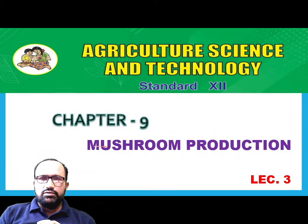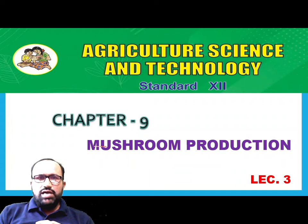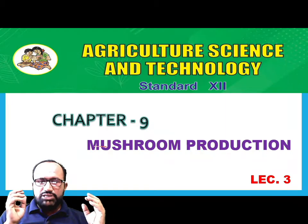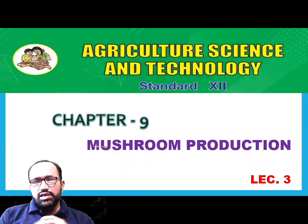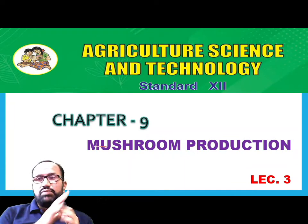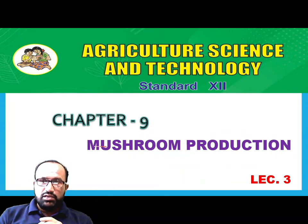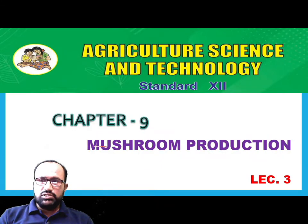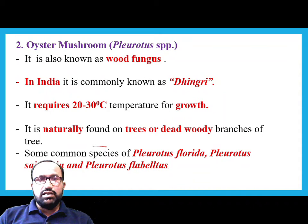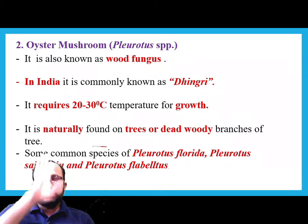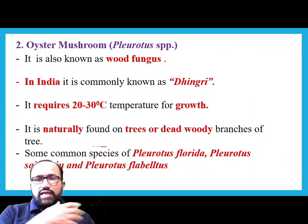Welcome to Khan's Crop Academy. Good morning students. We are going to learn Agriculture Science and Technology, Standard 12th, Chapter 9: Mushroom Production. In the previous lecture we explained the scope of mushroom production and types of mushroom. There are five types of mushroom. We covered button mushroom. In this lecture, lecture number two, we continue with the scope and types.